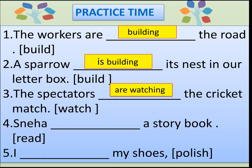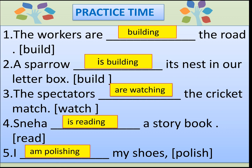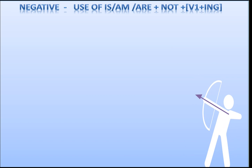Fourth: 'Sneha ___ a story book.' Verb: read. Sneha is a singular person, so the answer is: 'Sneha is reading a story book.' Last: 'I ___ my shoes.' Verb: polish. I takes 'am', so the answer is: 'I am polishing my shoes.' Good.